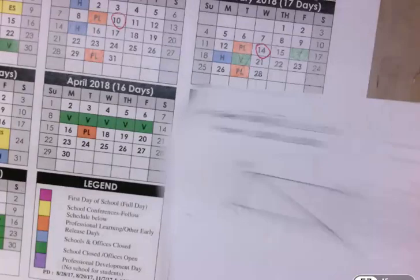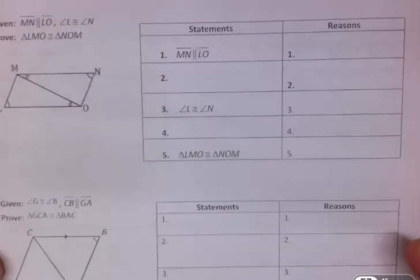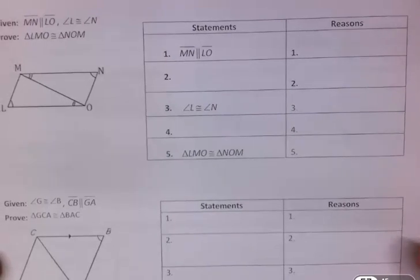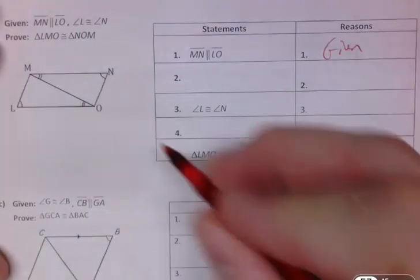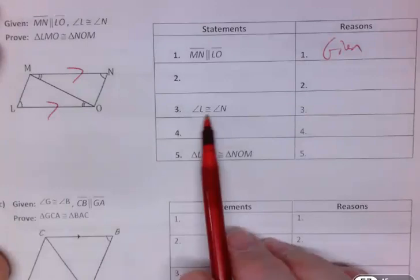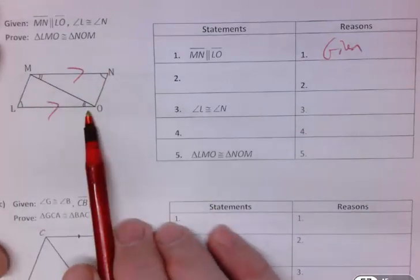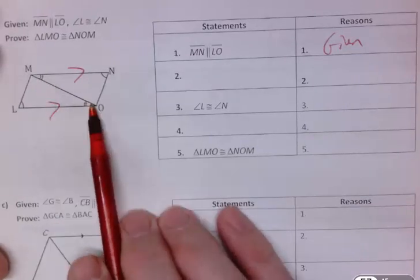Okay, how about another one? This time they actually marked some things for us. Interestingly enough, I think they might have accidentally given us too much information here as I'm looking at it a little more closely. They do give us this, so that's just given. But they didn't mark that as parallel. And then I see angle L is congruent to N, but then there's this other marking here kind of giving away what you're supposed to do.